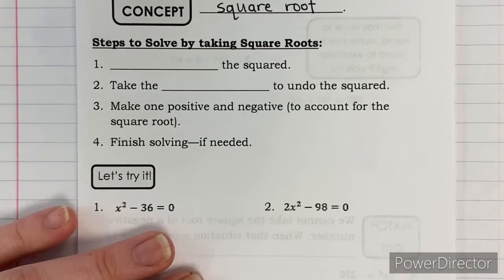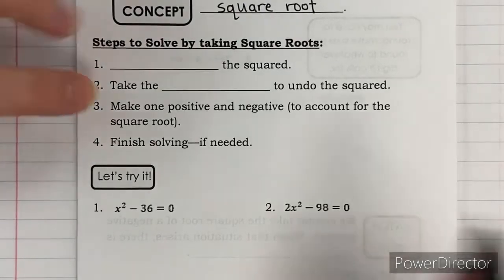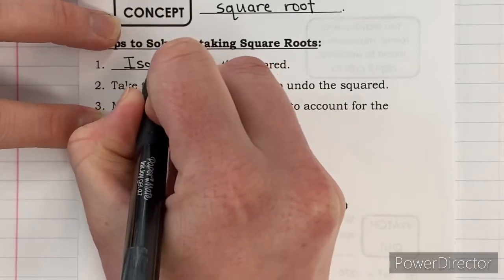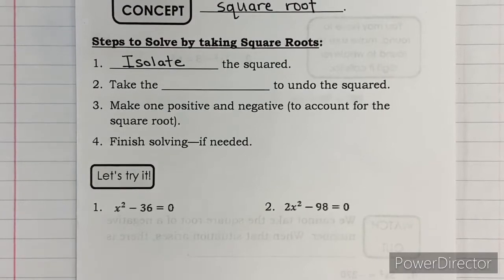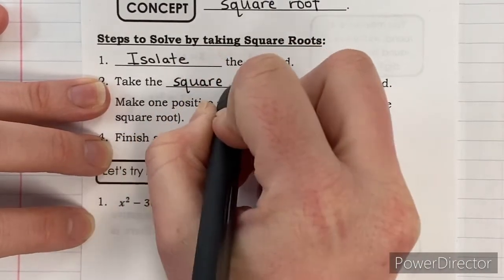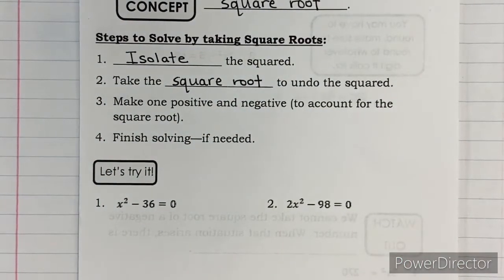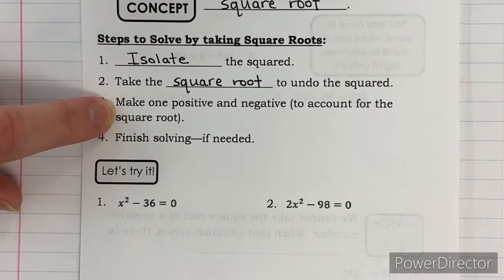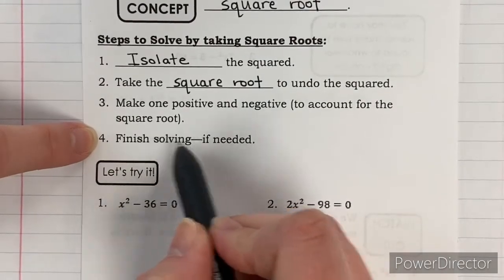Now let's take a look at the steps you need to use in order to solve using square roots. Step one is to isolate the squared — isolate means to get it by itself. Step two is to take the square root to undo the square. Step three is to make one positive and one negative to account for the square root. Step four says finish solving if needed — because sometimes you're not going to have to do step four.